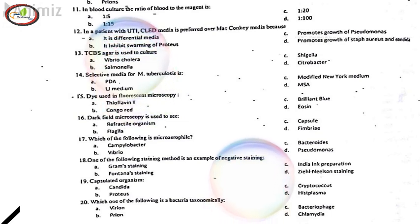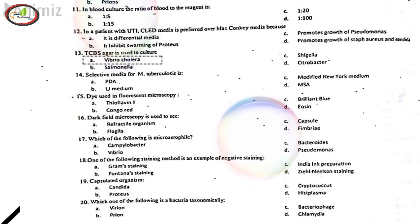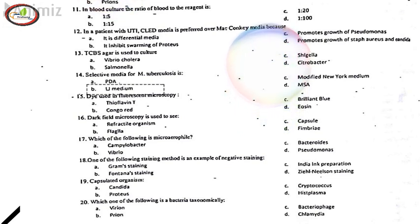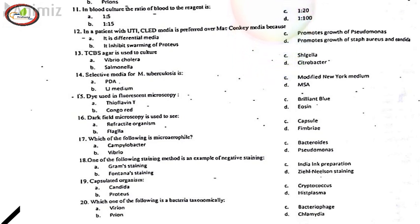13. TCBS agar is used to culture, A. Vibrio cholerae. 14. Selective media for M. Tuberculosis is, B. LJ medium. 15. Dye used in fluorescent microscopy, A. Thioflavine T. 16. Dark field microscopy is used to see, B. Flagella. 17. Which of the following is microaerophilic? A. Campylobacter.